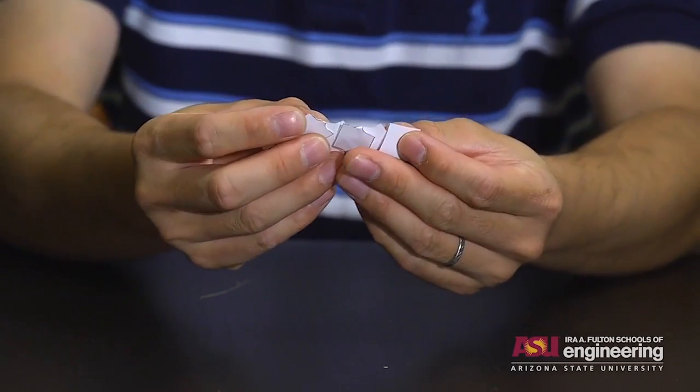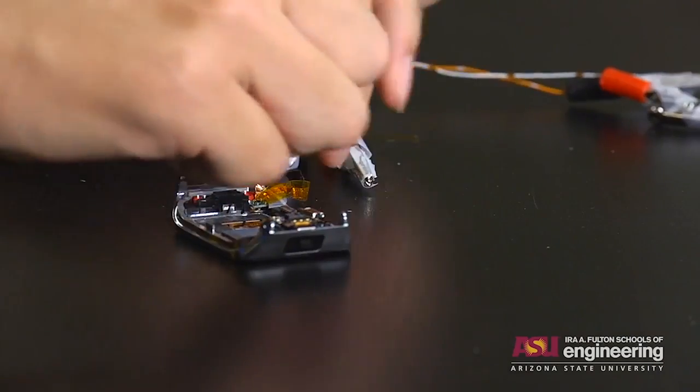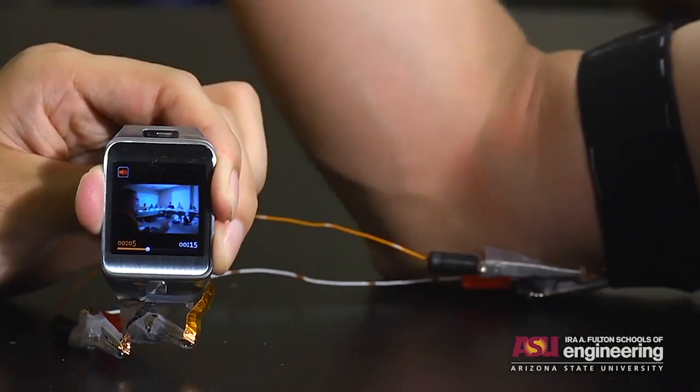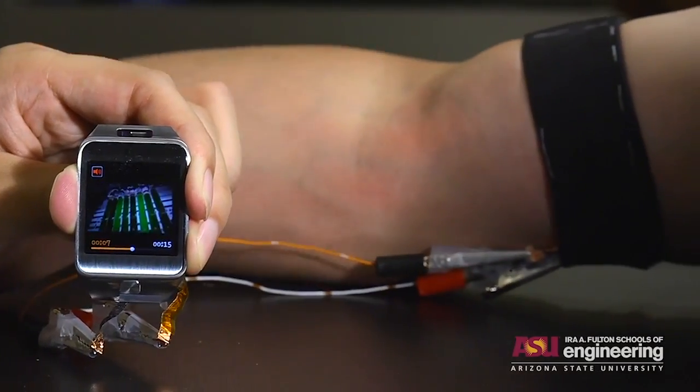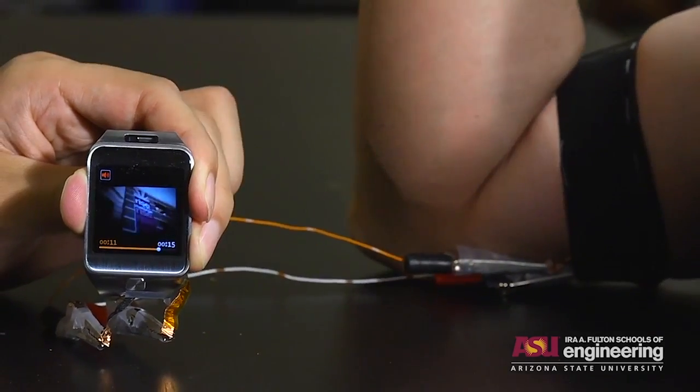This stretchable lithium battery was prototyped to be softer and stretchier to hopefully replace the hard plastics in wearable tech devices. And it powered this smartwatch while moving, so it's kind of legit. Eventually the engineers hoped their battery could be woven into fabrics.